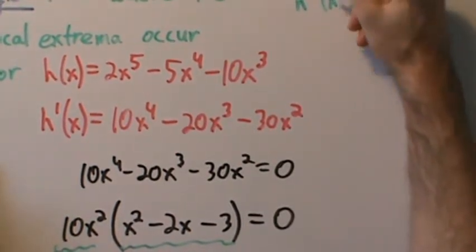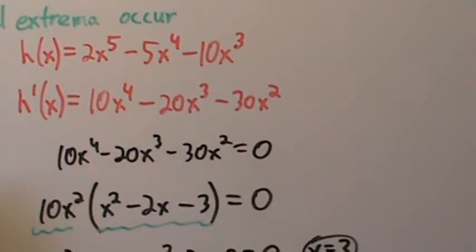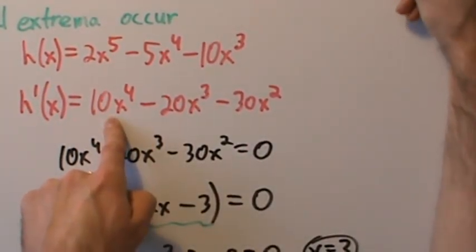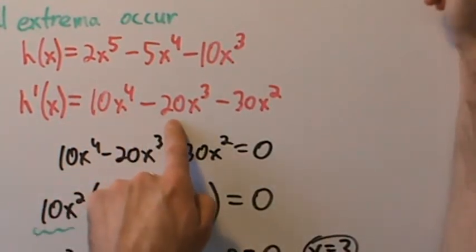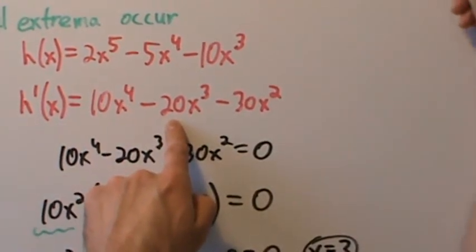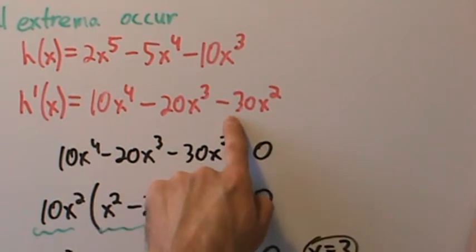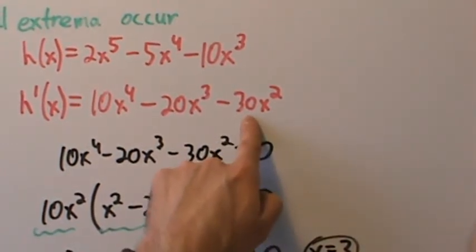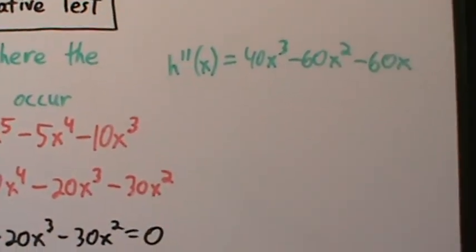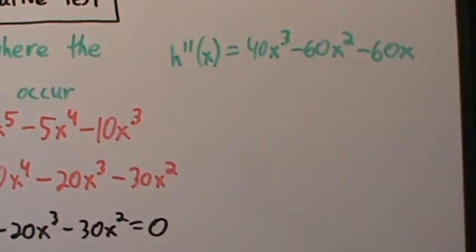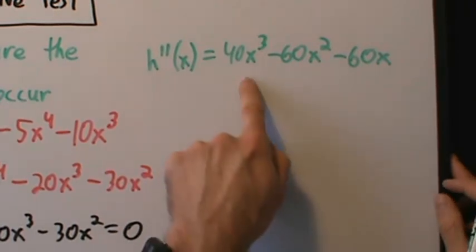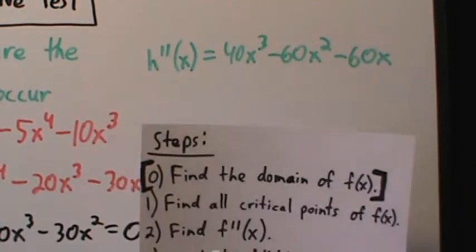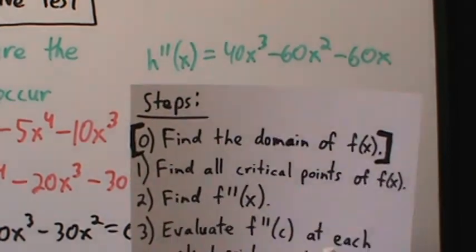So h double prime of x — let's go find the second derivative. Starting from h prime, h double prime of x is 40x cubed minus 60x squared minus 60x. That's step two: find the second derivative — really not bad for polynomials.